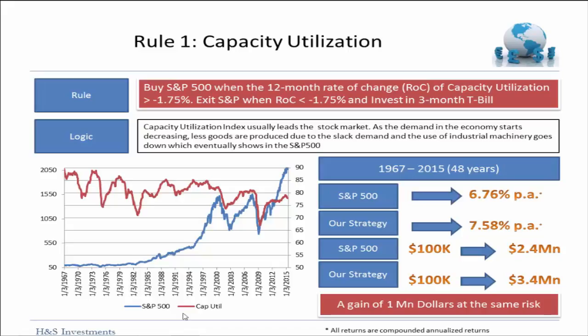Red is Capacity Utilization and blue is the S&P 500. Also, Capacity Utilization starts falling before the S&P 500. This is kind of where we are, so I would be concerned.